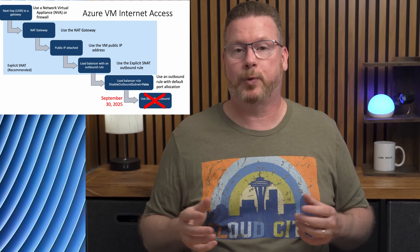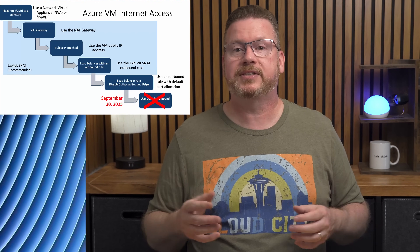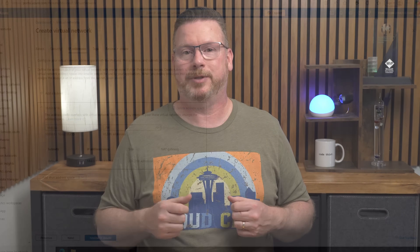Default outbound access will no longer be available at the end of September 2025. After that, any new virtual network will no longer have internet access unless administrators explicitly define outbound internet access. Existing VMs, however, will continue to use default outbound access — this change will not impact existing deployments. Before that happens, we can use private subnets to enforce explicit internet access. VMs attached to a private subnet don't have the default outbound option. We can apply private subnets to new subnets or convert existing subnets, limiting or transitioning outbound access before the deadline.